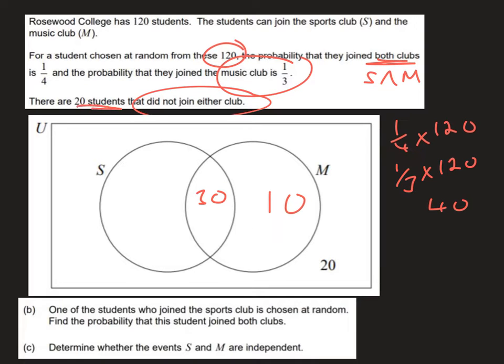Now we also know there are 20 students who do not do either and they are represented here. So in order to work out what goes in this missing section here that must be the difference between everything we've got here and the total of 120. So if we've got 30 and 10, that's going to give us 60, so therefore there must be a remaining 60 pupils who are in the sports club only.